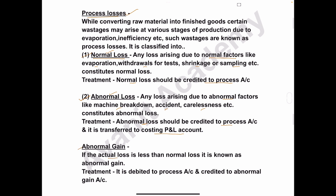Next we'll see the meaning of abnormal gain. If the actual loss is less than the normal loss, it is known as abnormal gain. This abnormal gain is debited to the process account — on the process account debit side you record abnormal gain — and credited to the abnormal gain account.